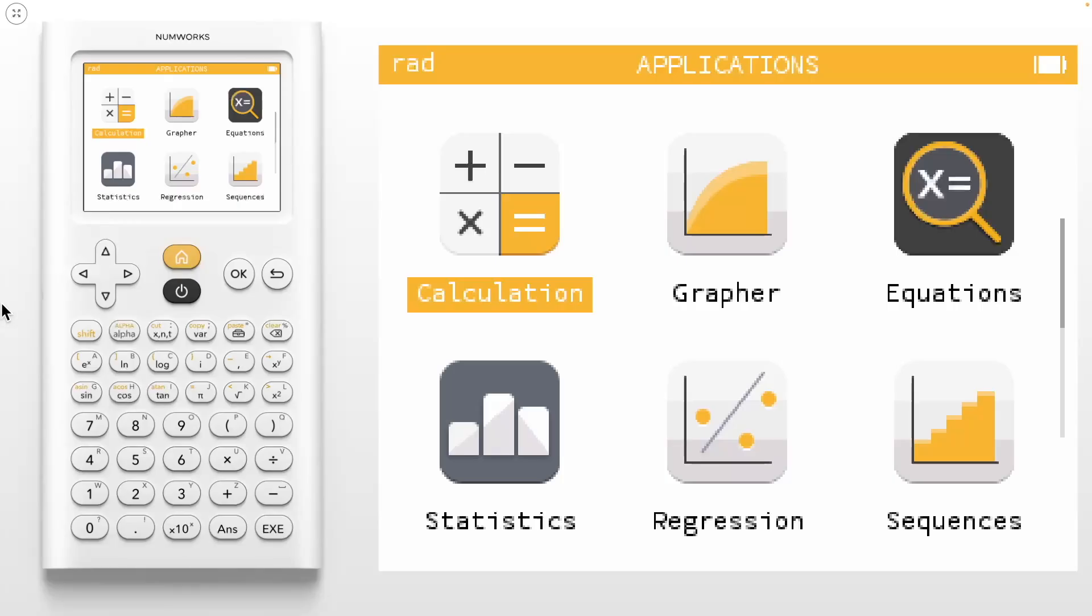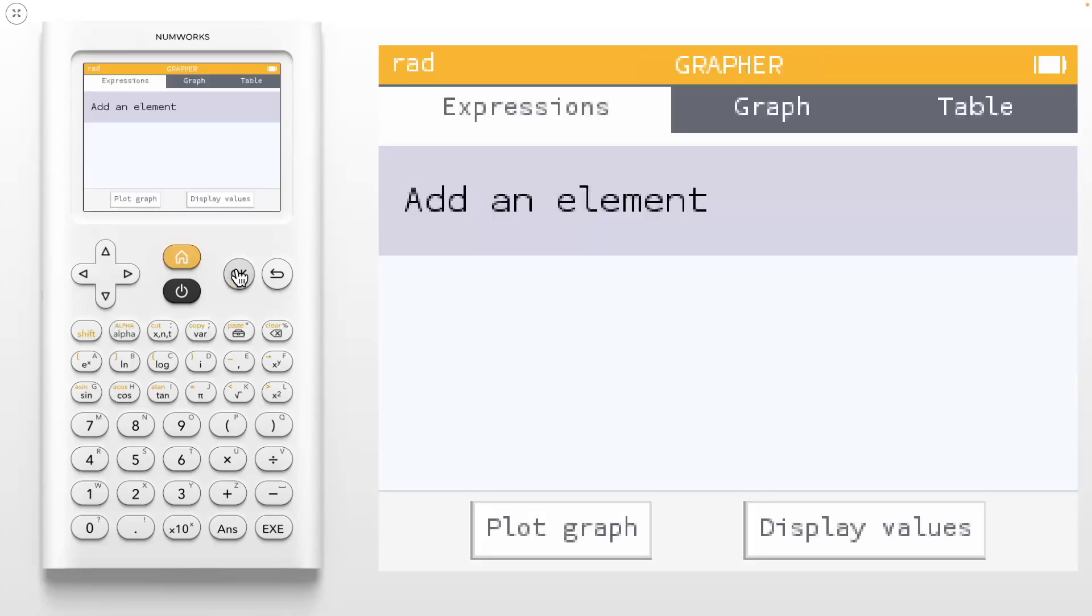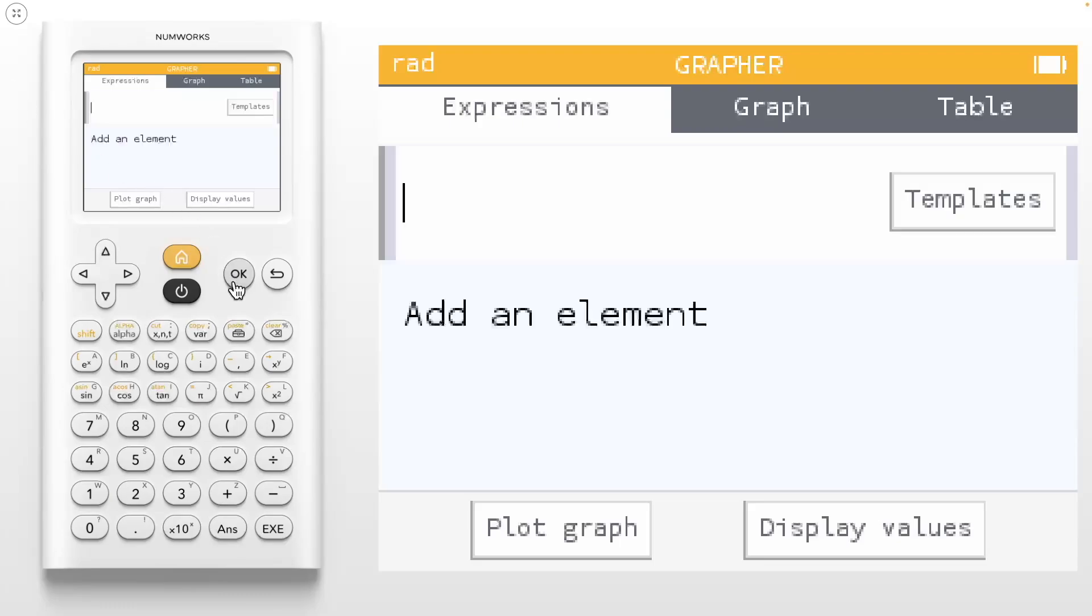The first application we will look at is our grapher application. The grapher app is split into three tabs as seen on the top: Expressions, graph, and table. To plot a graph, we must first add an expression in the expressions tab. Click OK to add an element. You can start typing here right away or go over to use a template.